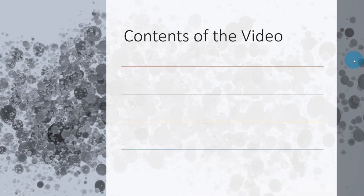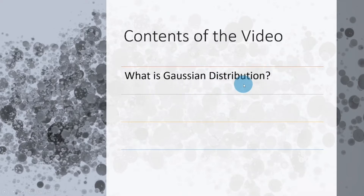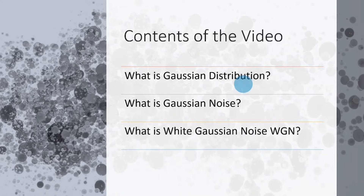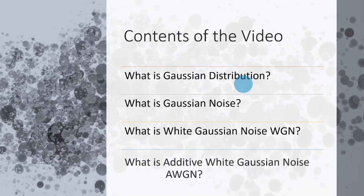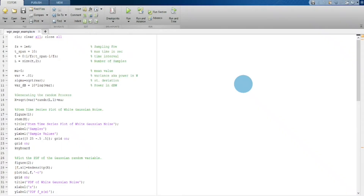In this video we are going to understand and visualize, at a certain abstraction level, what is Gaussian distribution, what is Gaussian noise, what is white Gaussian noise (WGN), and what is additive white Gaussian noise (AWGN). We will be using a MATLAB simulation; the code for this simulation is given in the description of this video.